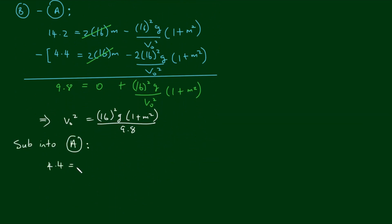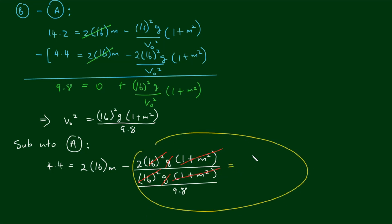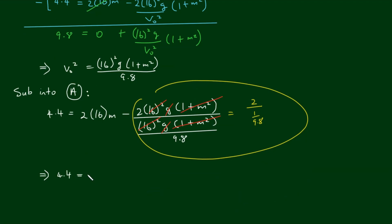And what we're going to do is substitute this into one of the above equations, let's substitute into a. This gives us 4.4 equals 2 by 16m minus 2 by 16 squared g times 1 plus m squared divided by 16 squared g times 1 plus m squared over 9.8. From this we can eliminate g, 16 squared, and 1 plus m squared, which means this whole thing equals 2 over 9.8.